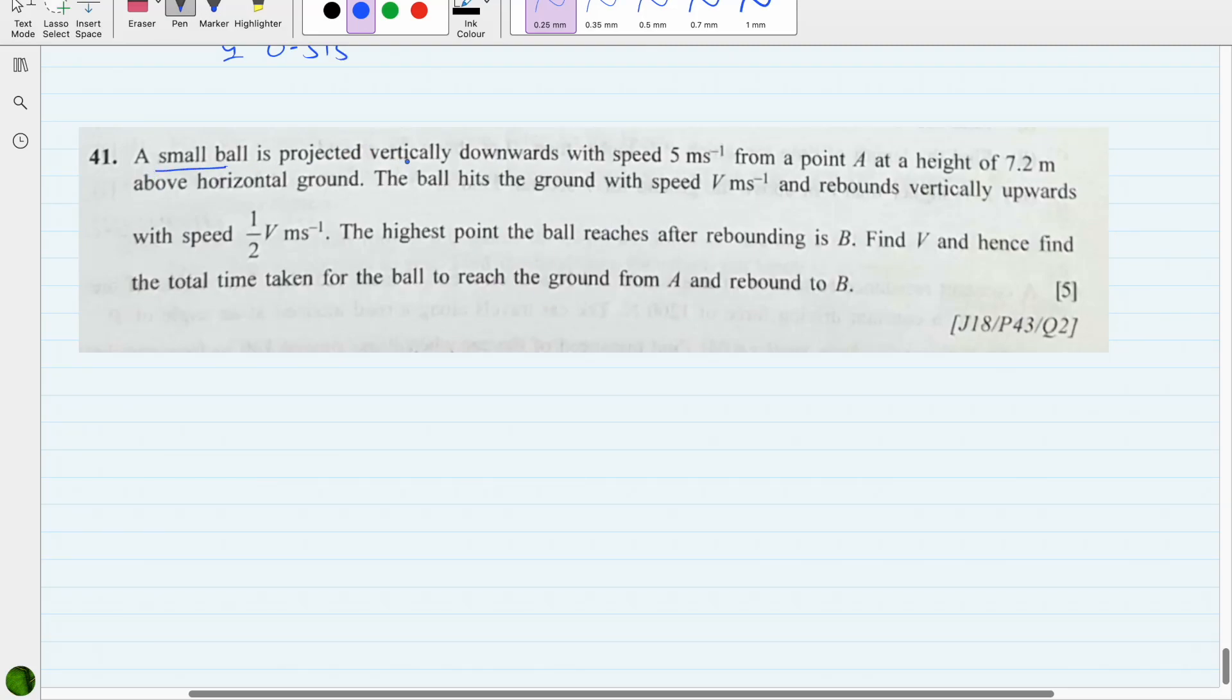A small ball is projected vertically downwards with speed 5 meters per second from point A at a height of 7.2 meters. Let this be that height, 7.2 meters. A ball is projected downwards and the initial speed is 5 meters per second above the ground.